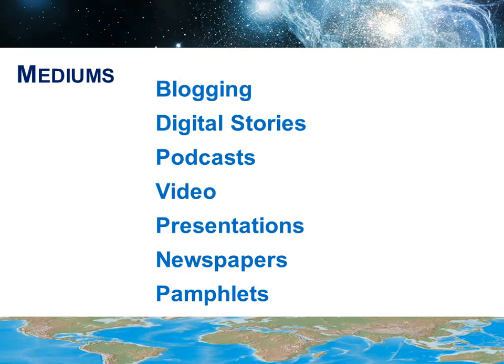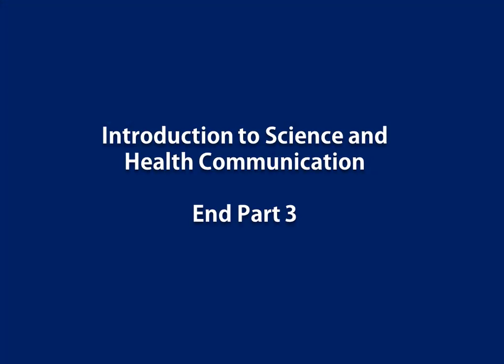As we wrap up Part 3, you've had a good overview of the challenges in communicating science and health, how to avoid some common traps, and how to approach producing a communications piece. Communication can take many forms, especially with the resources offered through the internet. Which form you choose may depend on who your audience is and how best you can reach them. Regardless of the form that you choose, the approach is the same: balancing accuracy and engagement to produce effective communication. In Part 4, the last video in the series, we'll take a look at a short case study to examine the delicate balance between accuracy and engagement.